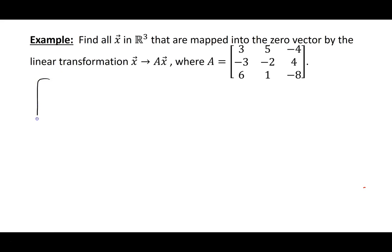In other words, we want to look at the augmented matrix with 3, negative 3, 6, 5, negative 2, 1, negative 4, 4, minus 8, augmented with zeros, and we'd like to go ahead and perform row reduction and figure out what vectors x satisfy the equation Ax equals zero.